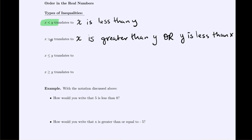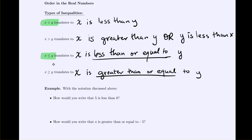Notice the similarity between our first and third inequalities — the only difference is the extra line beneath the symbol, which represents 'less than or equal to': x ≤ y. Similarly, our second and fourth statements are alike except that extra line makes it 'greater than or equal to': x ≥ y. For example, writing 'five is less than eight': five is the smaller number so the angle points toward it.